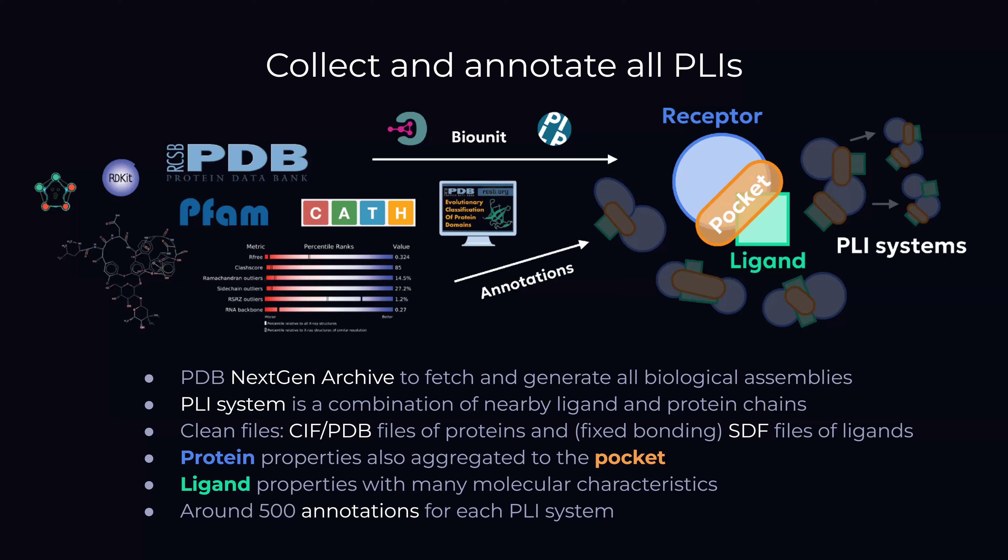We also provide SIF files for ligands with fixed bonding. We do quite a lot of annotations — we look at protein properties, pocket properties, ligand characteristics, and quality. Overall, approximately 500 annotations can be generated. We are constantly rethinking new ones to add, and maybe removing some if they're redundant, so don't be too hung up on that 500 number.